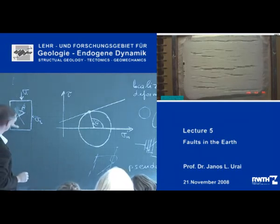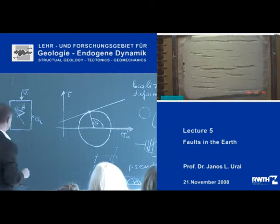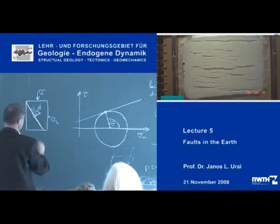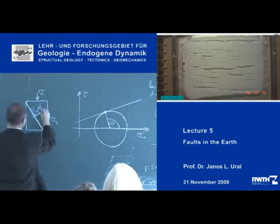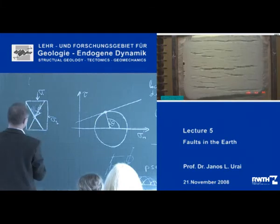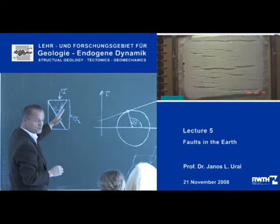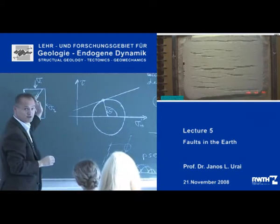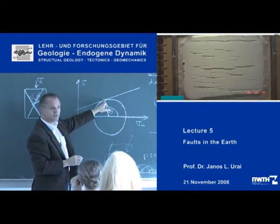So the fault normal makes the angle theta with sigma 1. This is then the plane that becomes the fault. And because of symmetry, you also get another fault. These two faults are the planes which are activated if the Mohr circle touches this line.